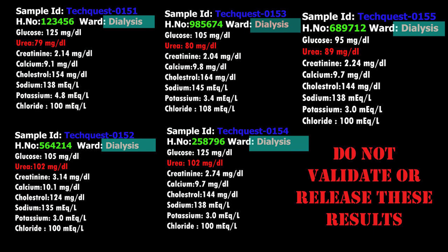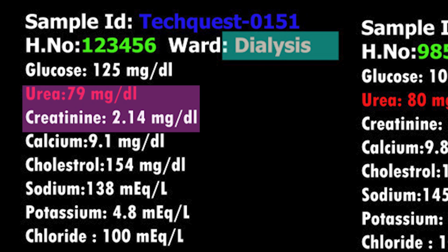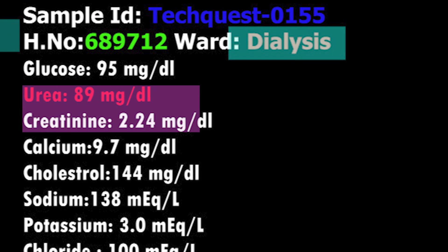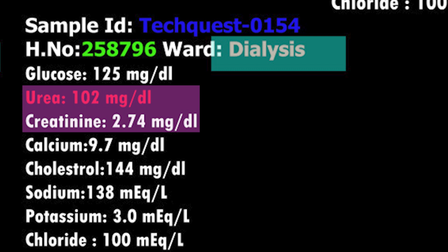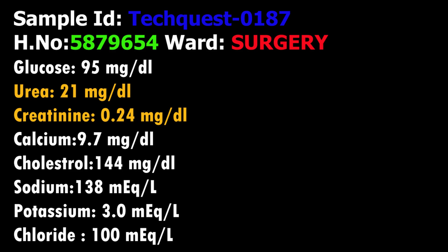Second: is there any correlating test available for this test? Luckily, when urea results are increased, the creatinine results are also high when there is an issue with kidney function. So check the creatinine results for increase for all these patients. All the samples have increased urea and creatinine levels.